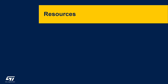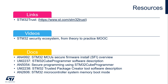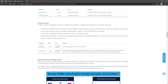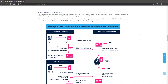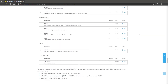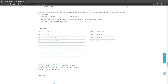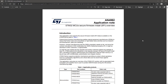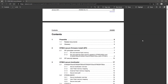This concludes the overview of the SFI solution. In this final section, we summarize the resources available for your developments. The best starting point is the STM32 Trust landing page, which includes a section dedicated to SFI together with links and references for the STM32 Security Ecosystem MOOCs videos. A key document to keep on hand is Application Note AN4992, which provides a comprehensive overview of the SFI solution and process, and where you will find all the information included in this video.